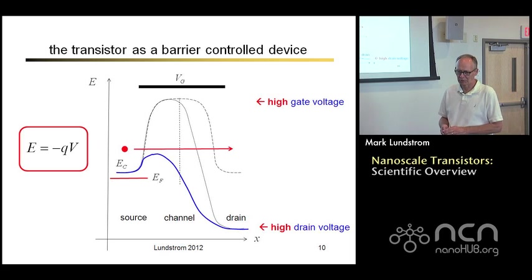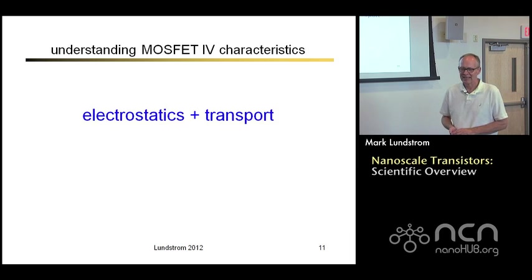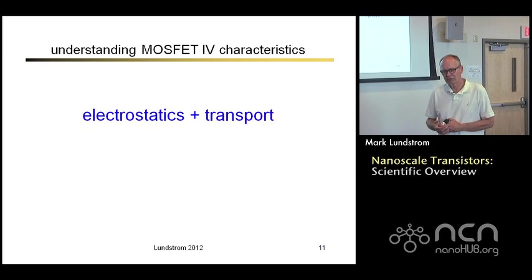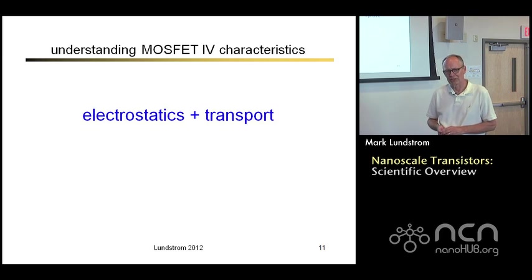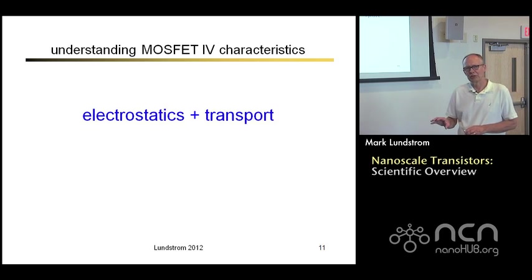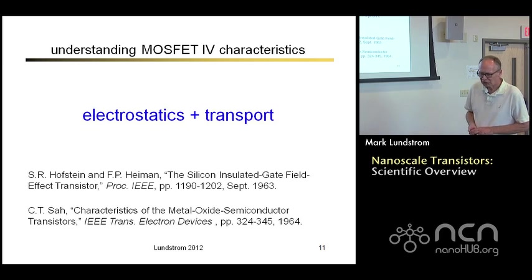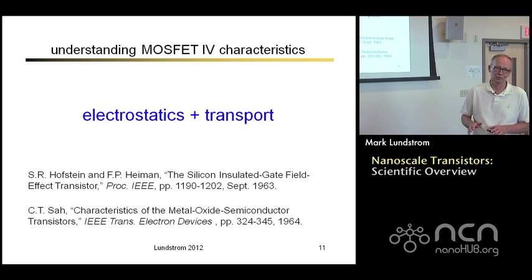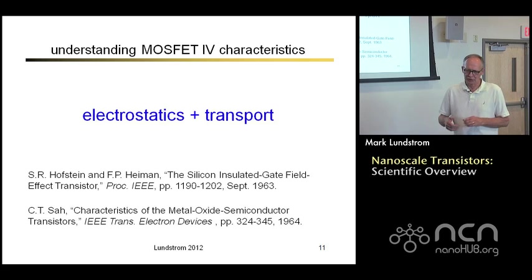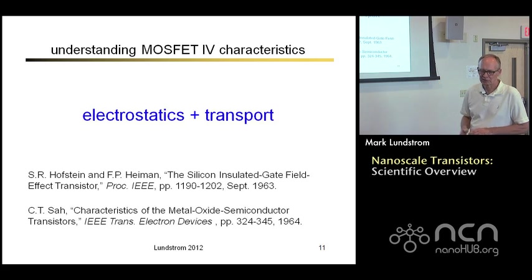The design of transistors so that they have proper potential energy barriers is far from simple. Understanding the current-voltage characteristics of a transistor really boils down to two things: understanding electrostatics — solving the Laplace or Poisson equation so that these energy barriers have the proper shapes and are controlled in the proper way — and then understanding carrier transport, how electrons flow when the energy barrier is pushed down. It's amazing if you look back to the early 1960s when people first developed the ability to build MOS field effect transistors and first started to think seriously about how to understand and model these devices. There are a couple of key papers that are really interesting to go back and read.